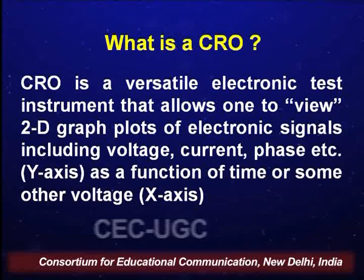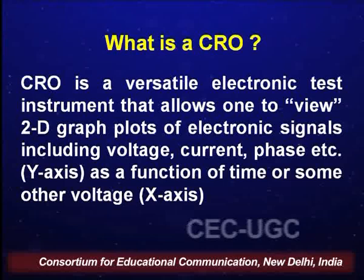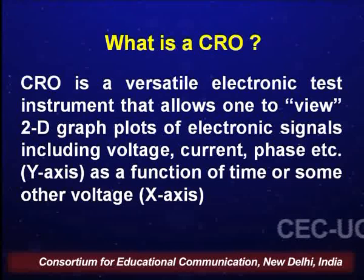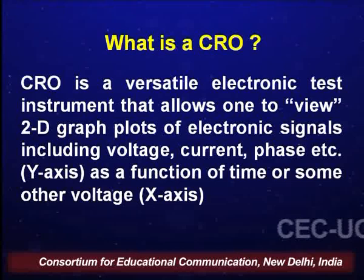So what exactly is a cathode ray oscilloscope? Its acronym is CRO. It is a versatile electronic test instrument that allows everyone to actually view the electronic signals including the voltage, the current, and the phase as a function of time or some other voltage. The independent variable is either the time or the voltage plotted on the x-axis, and the voltage, current or phase being the dependent variable are plotted on the y-axis.